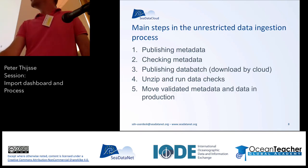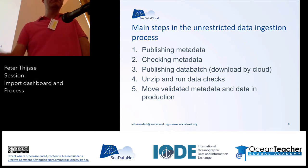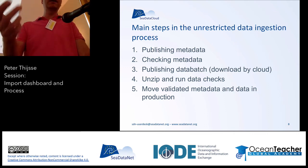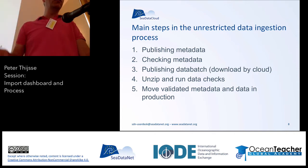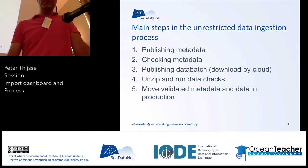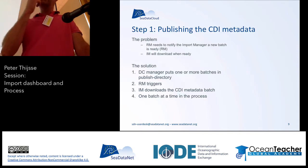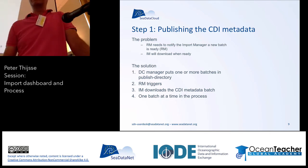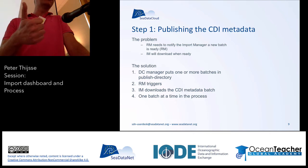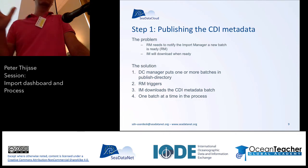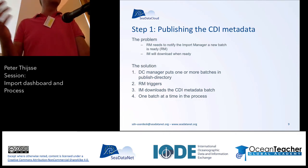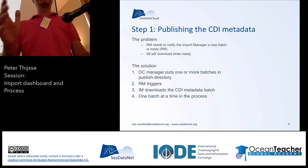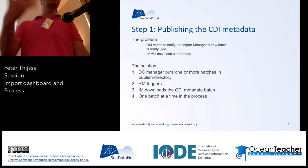Now I will go through the main steps of the process: publishing the metadata, the checks of the metadata, publishing the data batch which is downloaded by the cloud, then unzipping the data, running several checks, and in the end moving metadata and data into production. The big difference now is that you do not need to email something to my colleagues anymore. You trigger the process yourself — it's fully automated. You don't need to be in contact with my colleagues unless something goes wrong or you have questions, but you can trigger the whole process yourself.